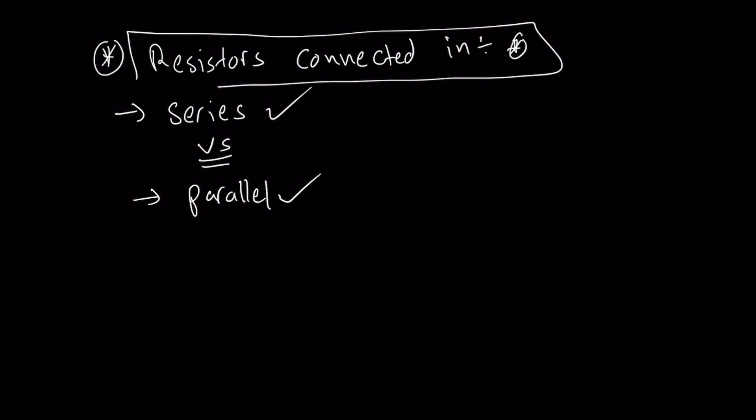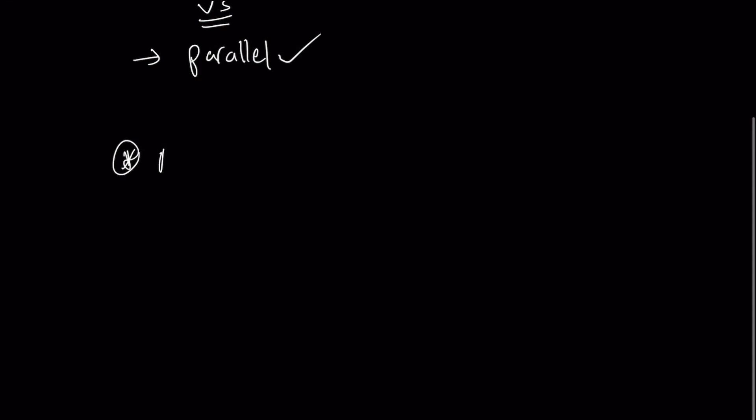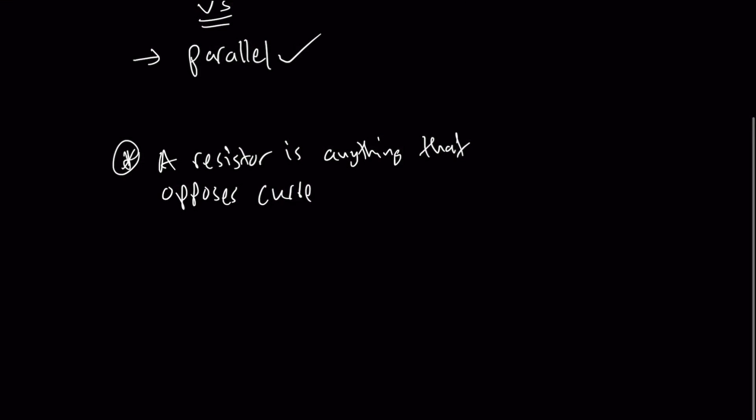Let's establish first of all what a resistor is. By definition, a resistor is anything that opposes current, and current is the rate of flow of charges. The terms current, voltage, and Ohm's law are covered in another lesson, so you should be familiar with Ohm's law — V equals IR — before attempting to solve problems in series and parallel.